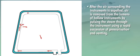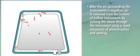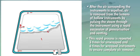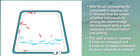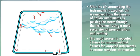Air is purged safely as the steam courses through the cassette and is expelled into a condenser bottle. After the air surrounding the instruments is expelled, air is removed from the lumens of hollow instruments by pulsing the steam through the instrument using a rapid succession of pressurization and venting.